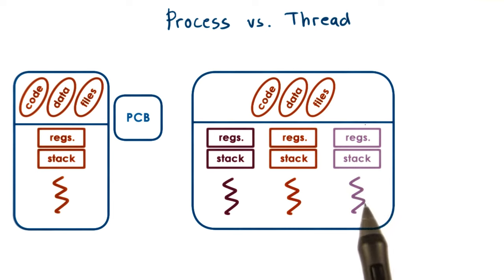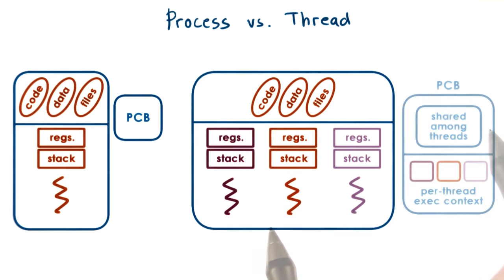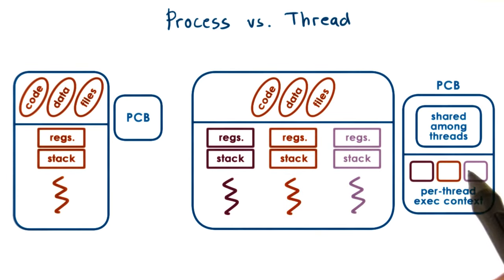So for each and every thread, we will have to have separate data structures to represent this per-thread information. The operating system representation of such a multi-threaded process will be a more complex process control block structure than what we saw before.